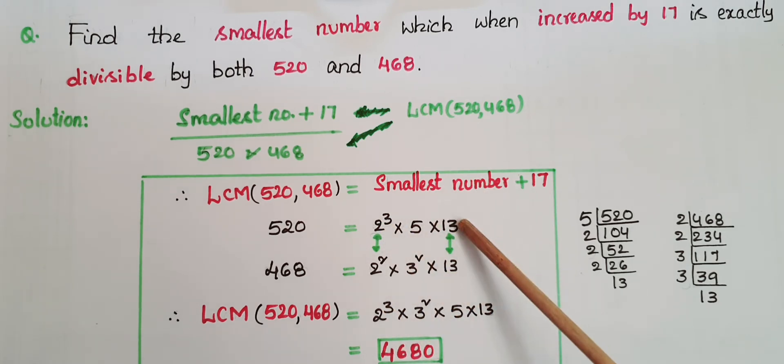And here 13 is the same power, so 13, and the remaining numbers are 3² × 5. So LCM of these two numbers is equal to 2³ × 3² × 5 × 13, that is 4680.